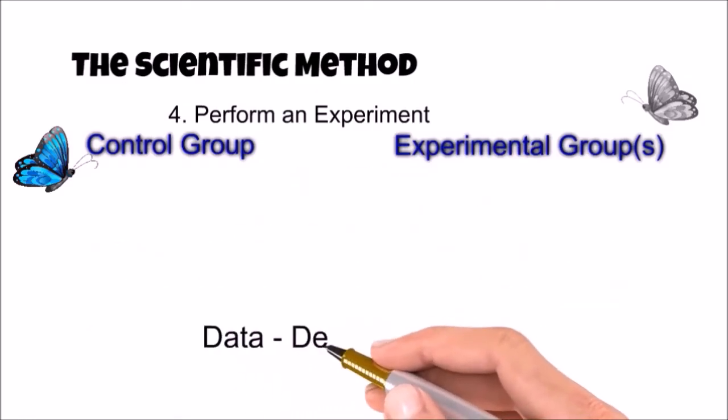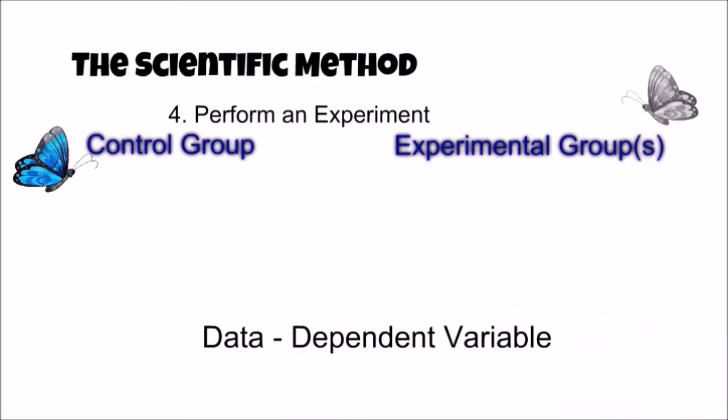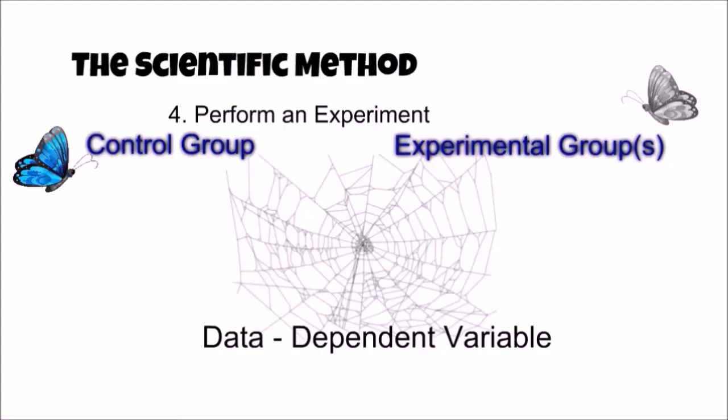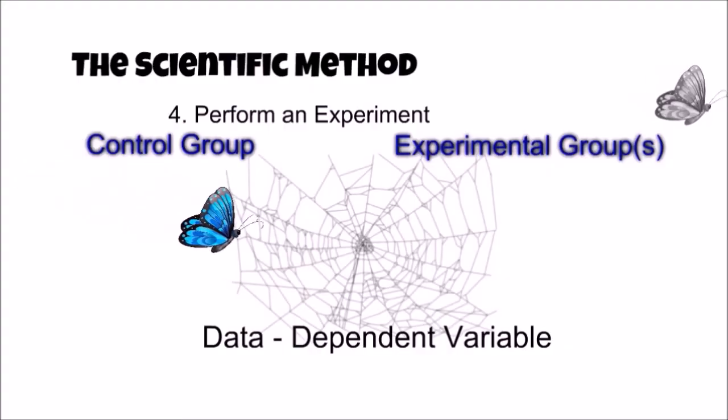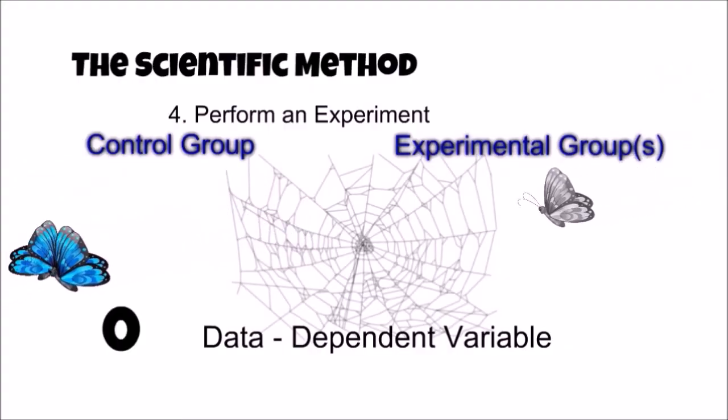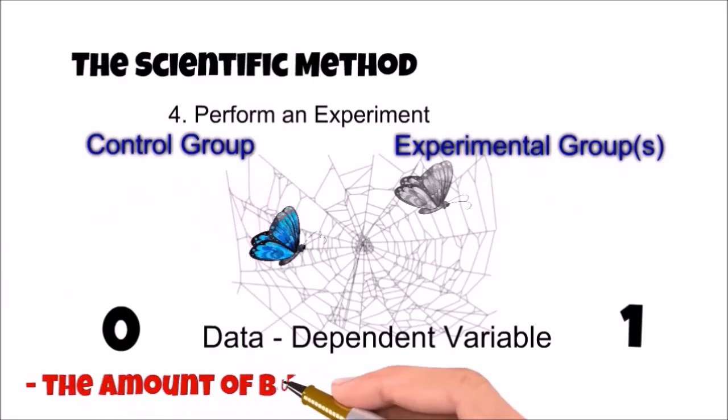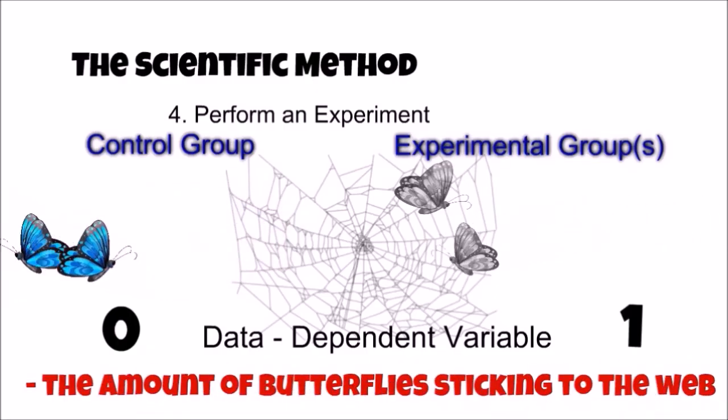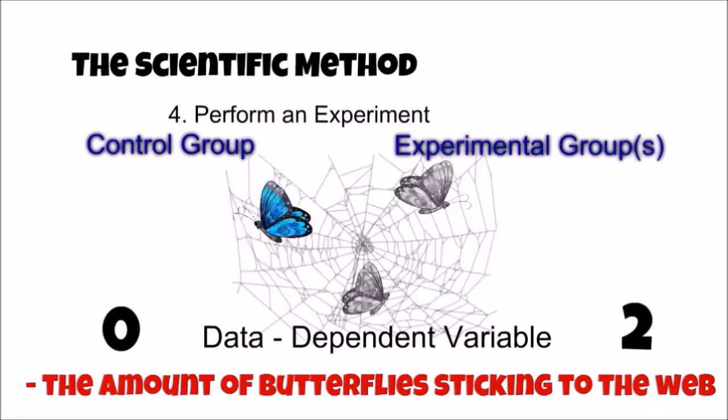During the experiment, data is collected. Data is also known as the dependent variable of an experiment. Data is considered the dependent variable because the data recorded may depend on the group being tested. For this experiment, the dependent variable is the amount of butterflies sticking to the web, which should depend on if the wings have scales or not.